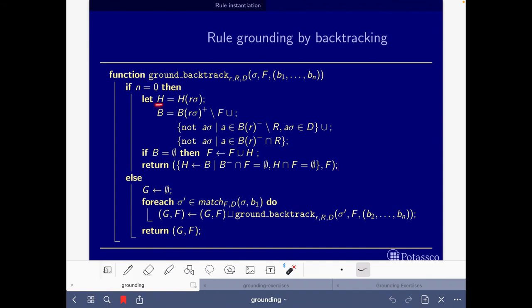So very quickly, what this says is that here we take the head of the rule, here we take the body, but we eliminate from the positive body the facts. So facts are eliminated if they occur in the positive body. Then we only take the negative literals if they are possible.